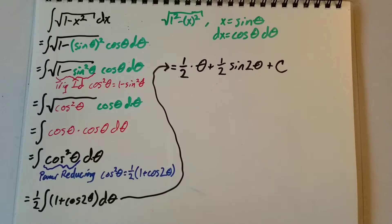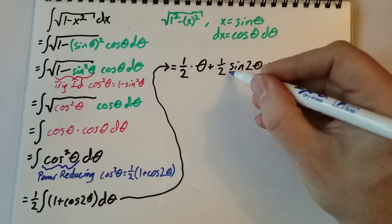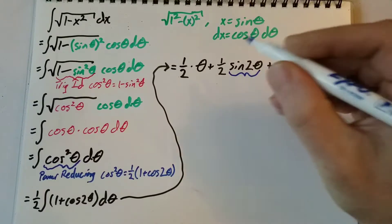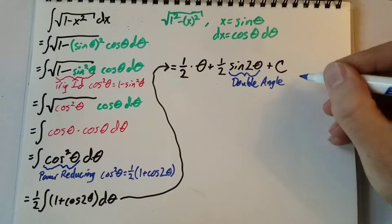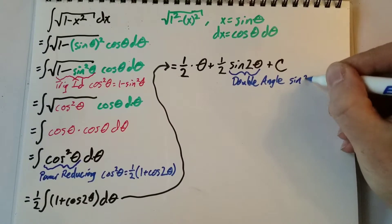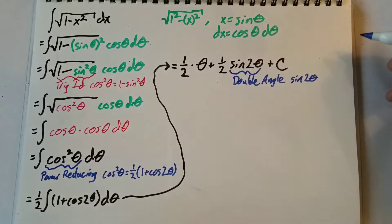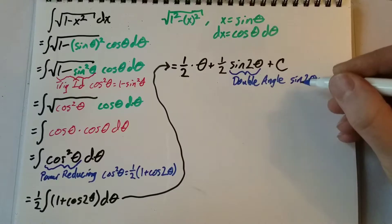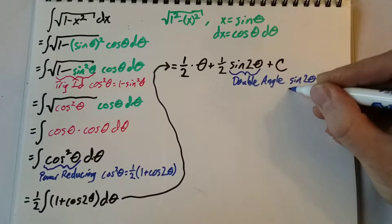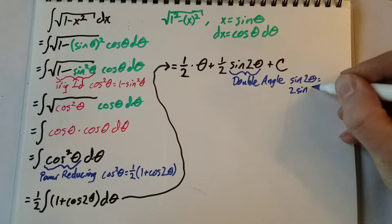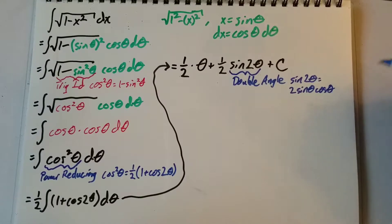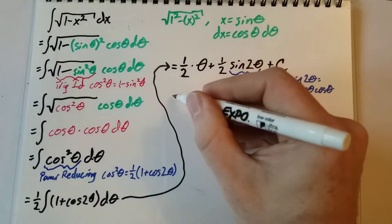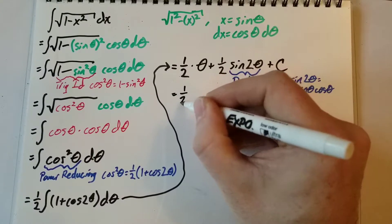Now we can use the double angle formula for this part. The double angle formula says that sine 2 theta equals 2 sine theta times cosine theta.